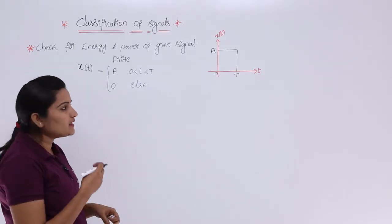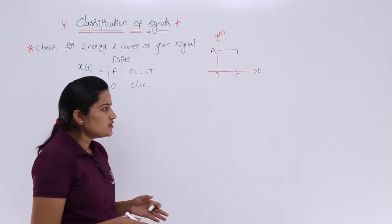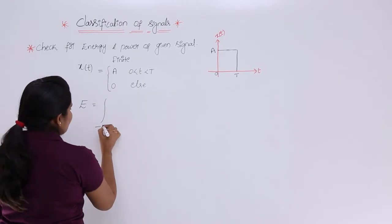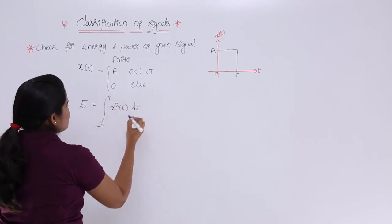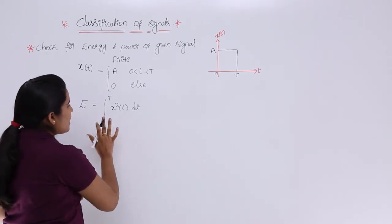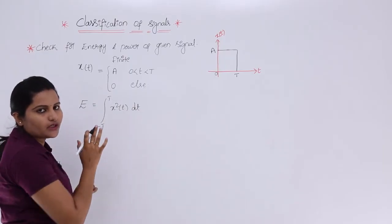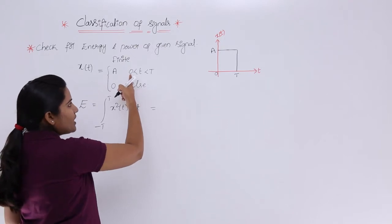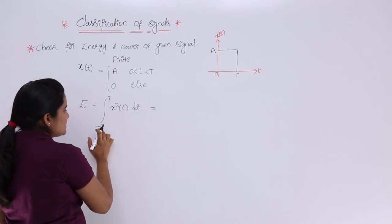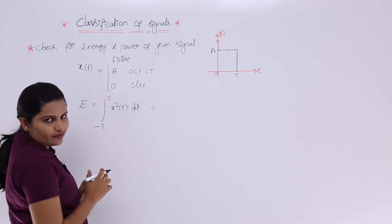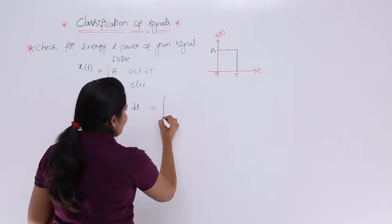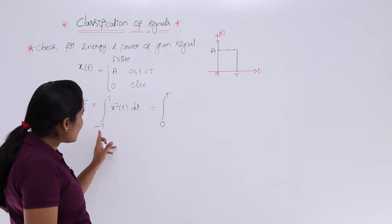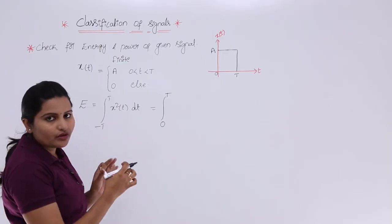First of all we do not know whether that is an energy signal or power signal — that we need to calculate. Here I am going to calculate energy first. The equation for finite duration energy calculation is the integral from −T to T of x²(t) dt. This is the formula to calculate finite duration energy. Now I am going to substitute the values. You are having the signal from 0 to T only. So if you segregate this integral from −T to 0 and 0 to T, then from −T to 0 you are not having a signal, so your integral value is 0 there. Your limits are going to vary from 0 to T.